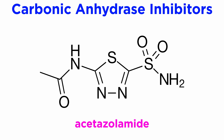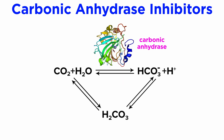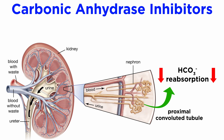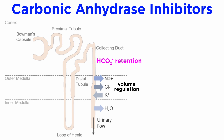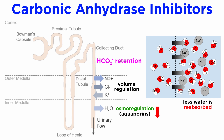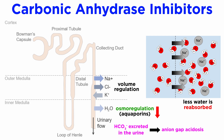The last class of drugs we will briefly discuss are carbonic anhydrase inhibitors, such as acetazolamide. These inhibit the enzyme carbonic anhydrase, which is responsible for catalyzing the reversible reaction between carbon dioxide and water to form bicarbonate and protons. With carbonic anhydrase inhibitors, this reaction is inhibited and there is less production of bicarbonate and protons. This leads to a reduction in bicarbonate reabsorption from the lumen of the proximal convoluted tubule. The retention of bicarbonate in the tubule leads to less water reabsorption through osmotic pressure and greater diuresis. Because of the increased excretion of bicarbonate, a common side effect of these drugs is anion gap acidosis, which needs to be managed.